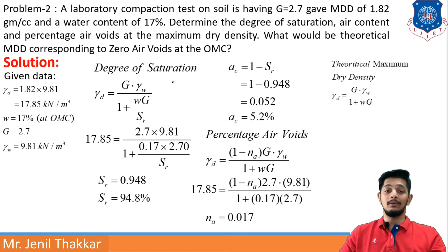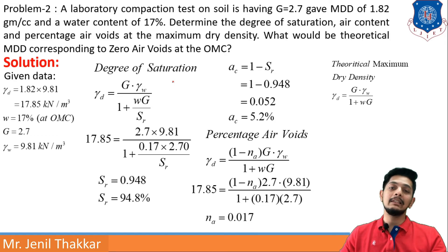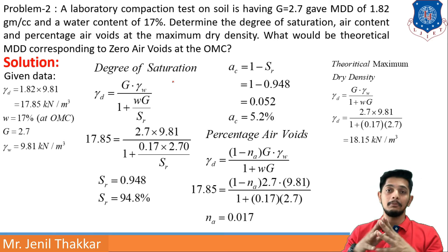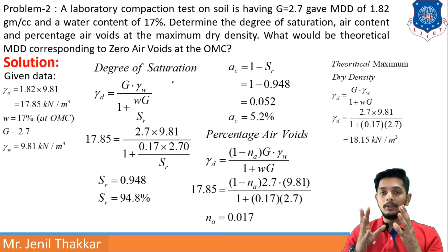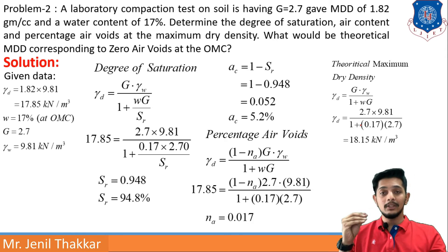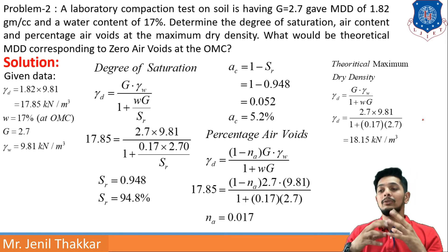Now for the theoretical MDD at zero air voids: using γd = G·γw / (1 + wG) with Sr = 1 (fully saturated, zero air voids), G = 2.7, γw = 9.81, and w = 17% (the OMC), γd comes out as 18.15 kN/m³. That is the theoretical maximum dry density. This completes Problem 2.